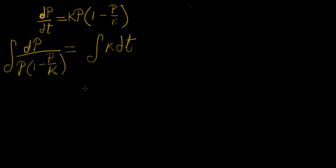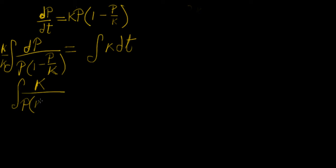There's a general rule for integrating fractional functions like this: we don't want any fractions in the denominator, as that simplifies calculations later on. To get rid of the k in the bottom, we can multiply both the numerator and denominator by k over k, because this is essentially 1. That leaves a k on top, and k multiplies everything inside the brackets, giving k minus k times p over k — the k's cancel, leaving p.